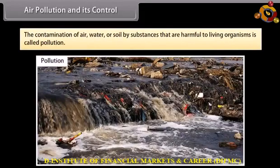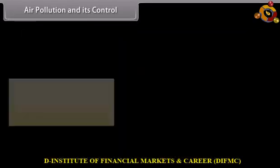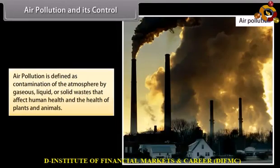Air pollution and its control. The contamination of air, water, or soil by substances that are harmful to living organisms is called pollution. The waste matter or substance that contaminates air, soil, and water is called a pollutant. Air pollution is defined as contamination of the atmosphere by gaseous, liquid, or solid waste that affects human health and the health of plants and animals.